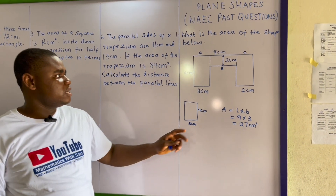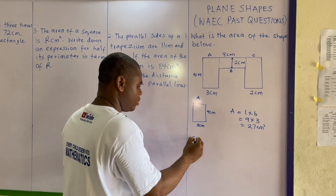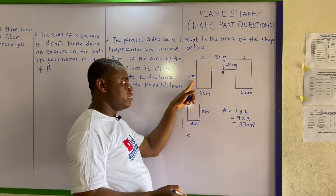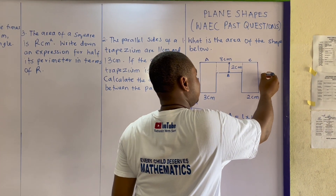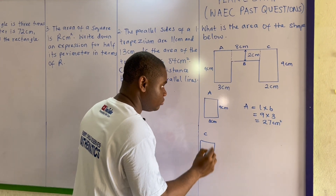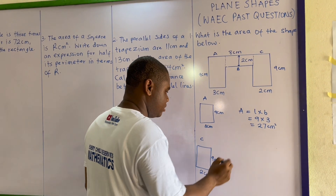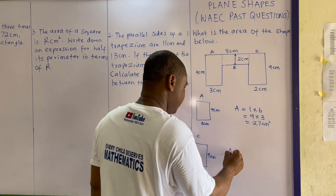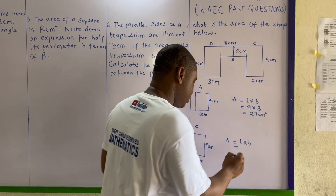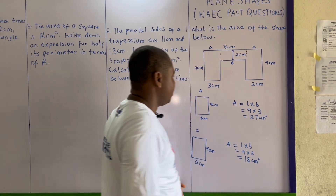For shape C, we have two centimeters and nine centimeters — since the other side is nine, this will also be nine centimeters. So the area is length times breadth: nine times two equals 18 centimeters squared.